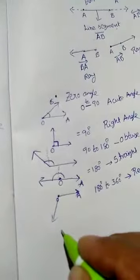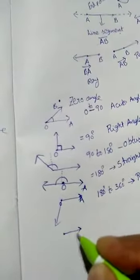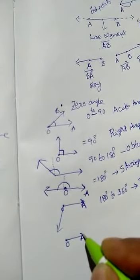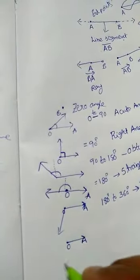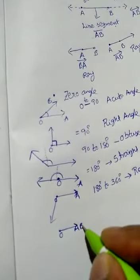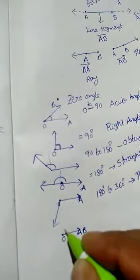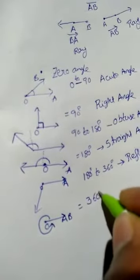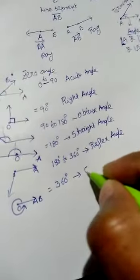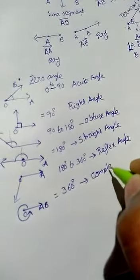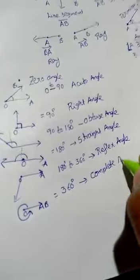When the angle is more than 180 degrees up to 360 degrees, that angle is called a reflex angle. And when the terminal ray makes one complete round and reaches back to the initial position — that means the angle is exactly 360 degrees — that is called a complete angle.